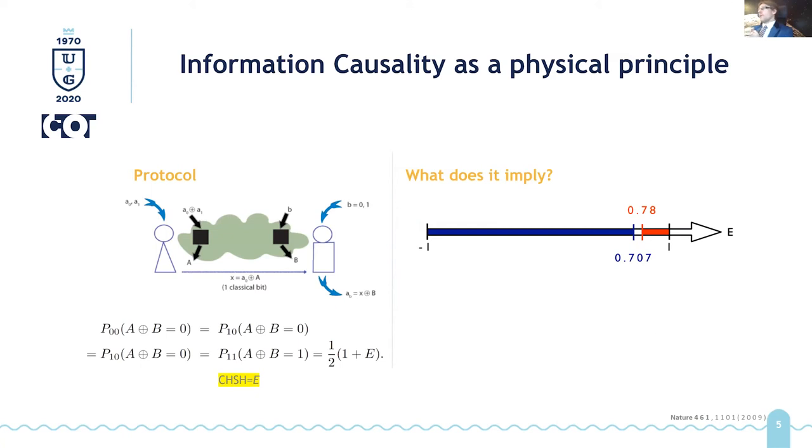Moreover, we can check how much noise we should add to PR boxes, or how close we need to be to Tsirelson bound in order for these probabilities not to violate information causality. And if you look at this protocol, we found that this E, which is basically the correlation function has to be smaller or equal 0.78. So all the red part on this arrow is excluded by information causality. While quantum mechanics allows you to go as high as 0.707.